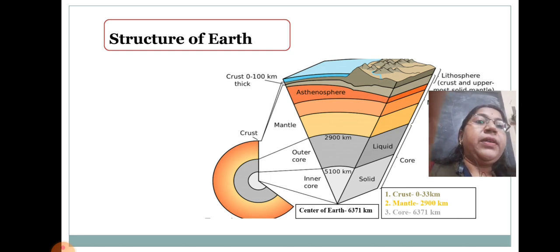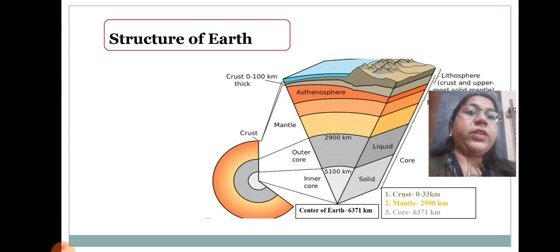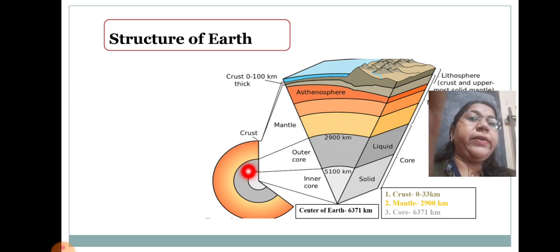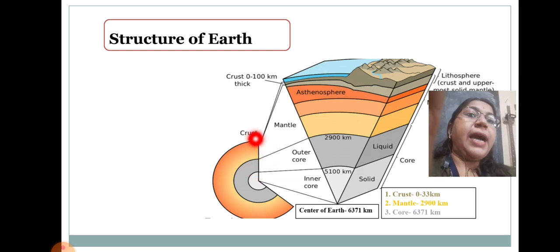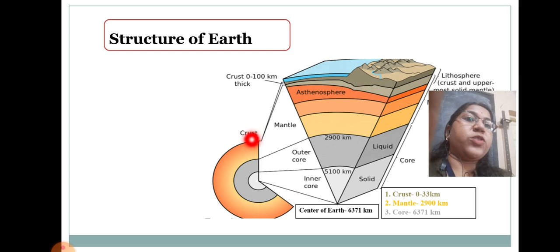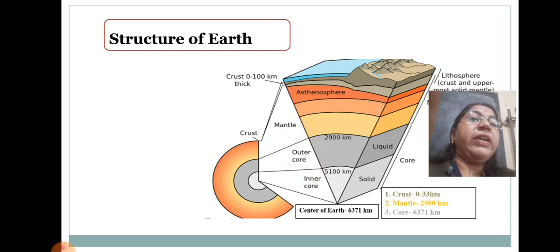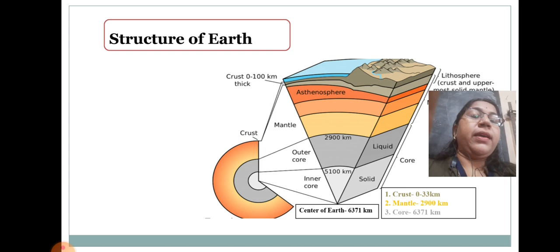The structure of Earth is given here. The outer part of the Earth is called the crust. Then there is the core — that is the outer core, inner core — and the mantle as well. We will discuss all of these in detail in the next slide.